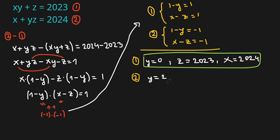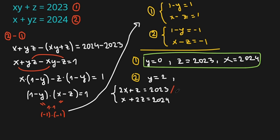From the second case, 1 minus y equals minus 1 and x minus z equals minus 1, so y equals 2. Replacing y with 2 in the original equations gives us 2x plus z equals 2023 and x plus 2z equals 2024.